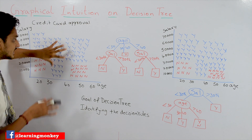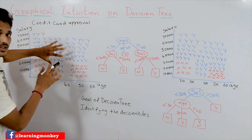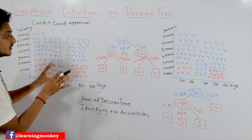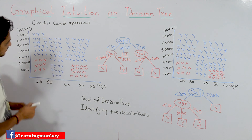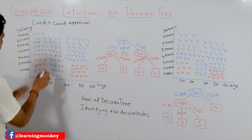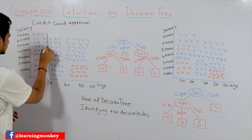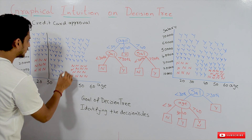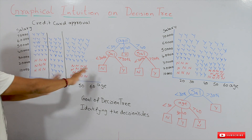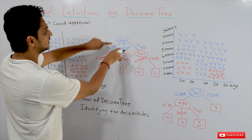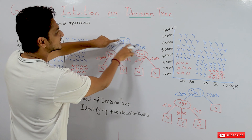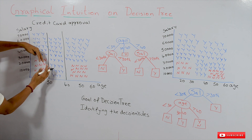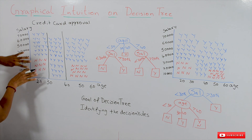The goal of decision tree is to identify the logic hidden in this dataset. By looking at this dataset, we make a separation: age less than 30, age 30 to 41, and age greater than 41. That is what we have done here — three separations based on age.